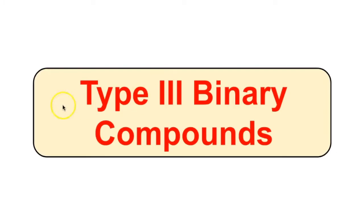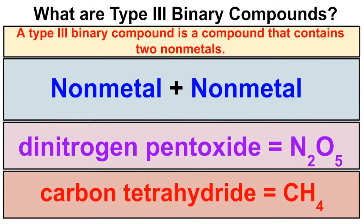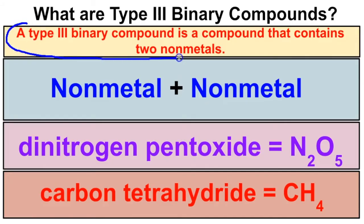Hey you guys, this is Mr. Millings and in this video we are going to learn about type 3 binary compounds. In an earlier video we talked about type 1 and type 2 binary ionic compounds. Today we're going to learn about type 3 binary compounds. A type 3 binary compound is a compound that contains just two non-metals.